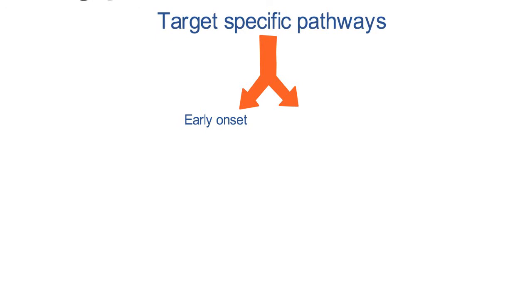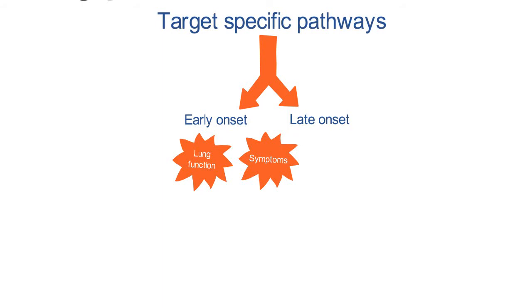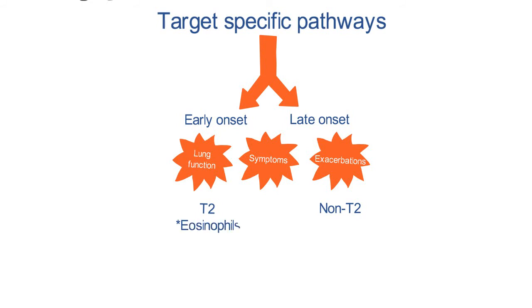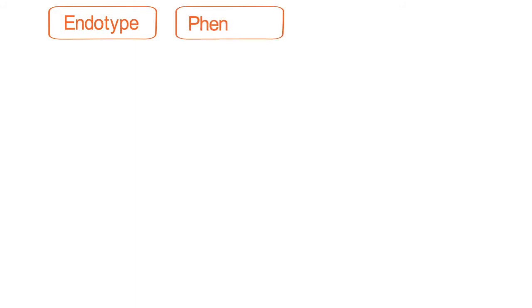There could be a reflection on when the asthma began — early in life or late in life. Lung function is important, as are symptoms, the pattern of exacerbations, and the kind of inflammatory phenotype — whether it's type 2 asthma or non-type 2 asthma, which tends to be associated much less often with eosinophils. Driving this are multiple different mechanisms or endotypes.